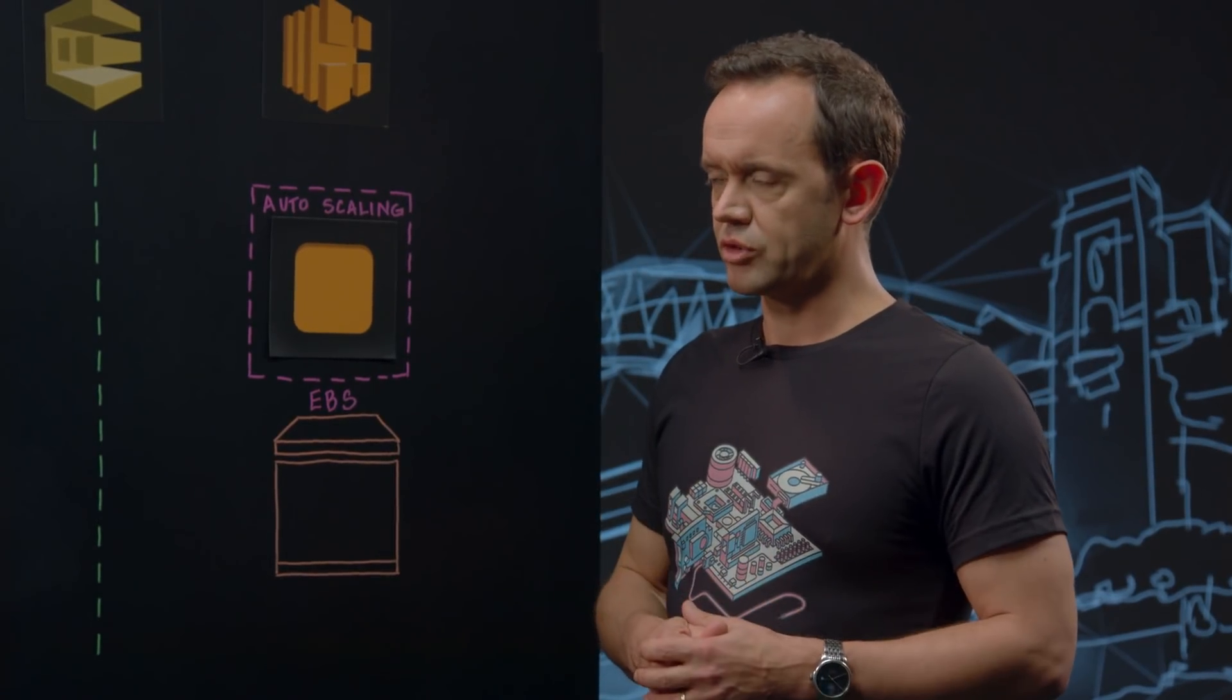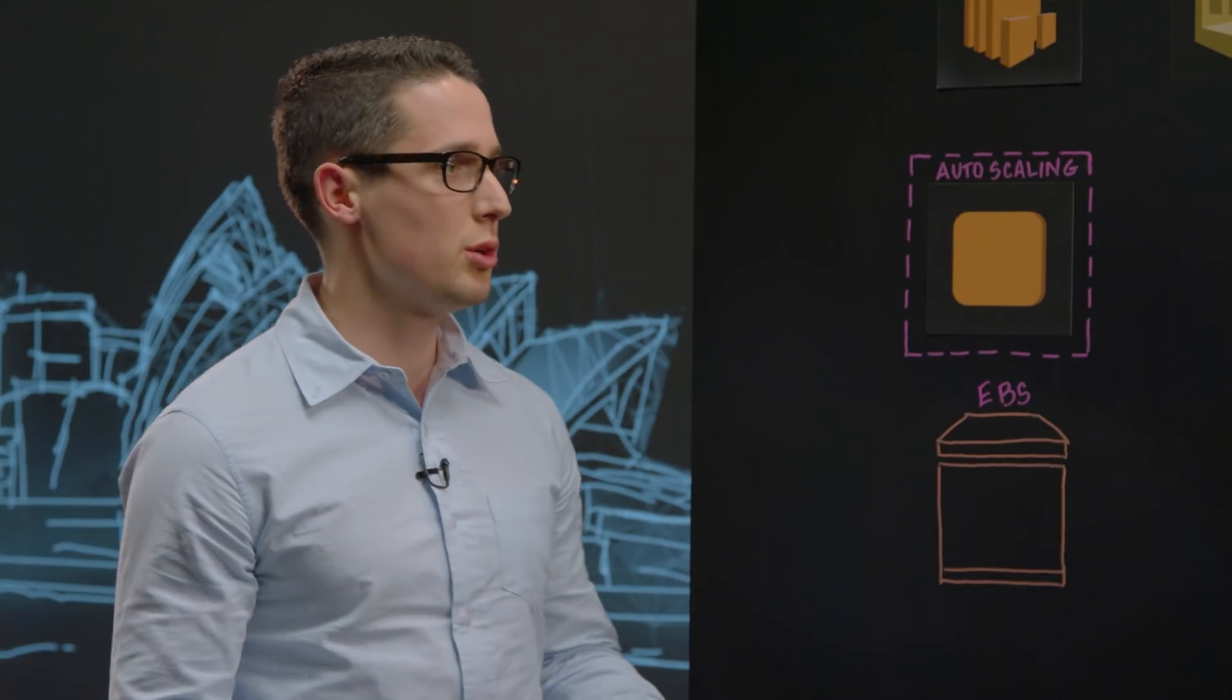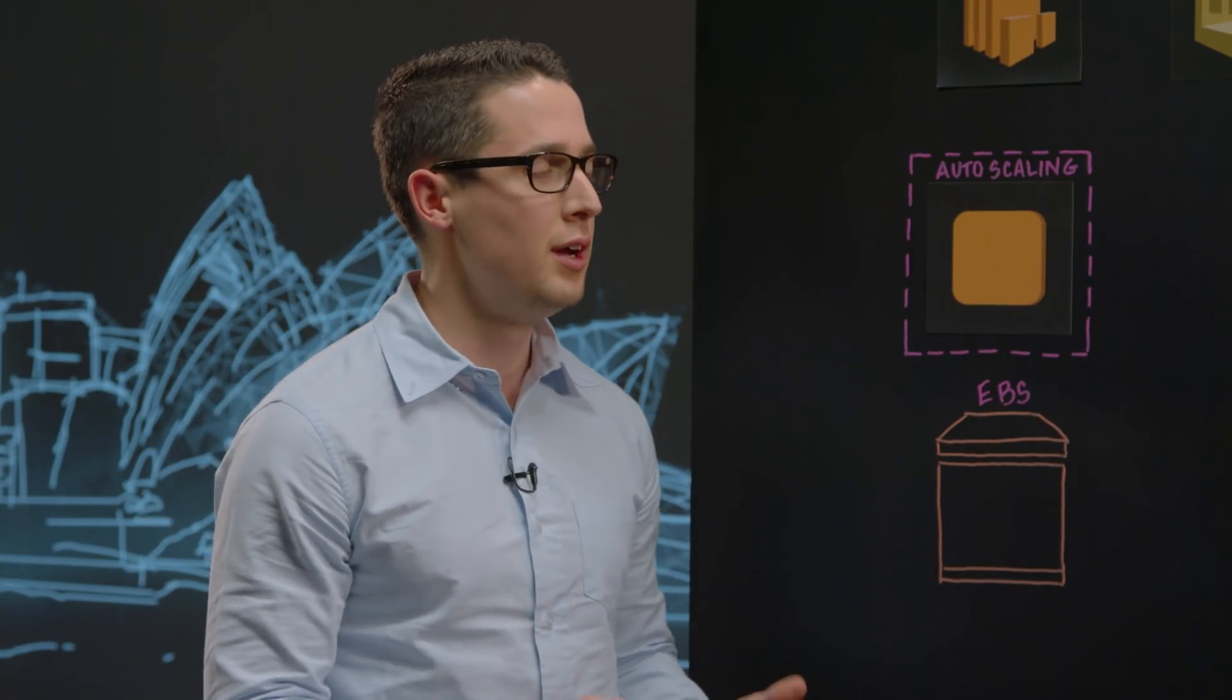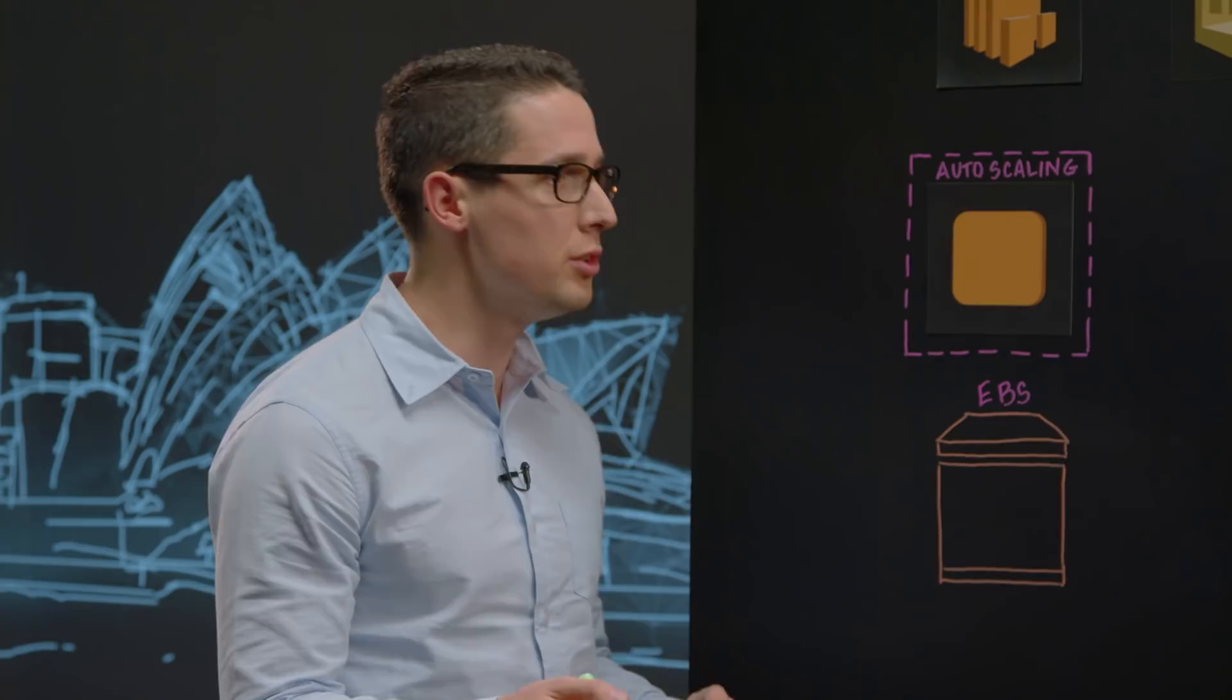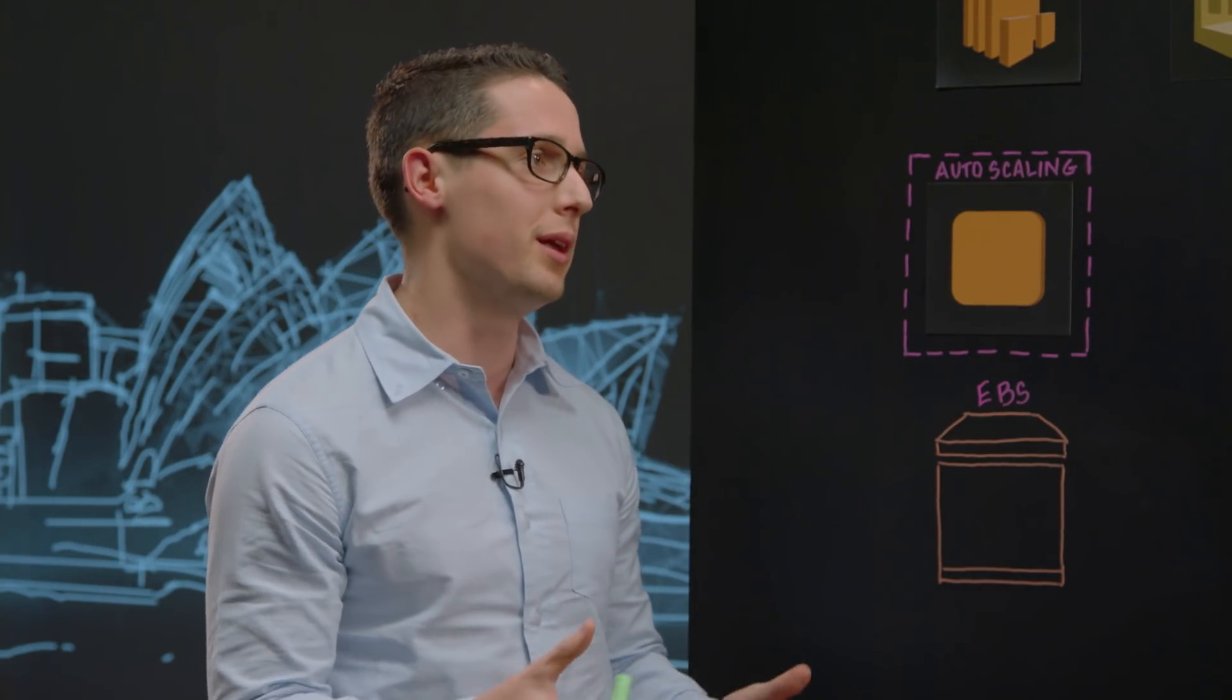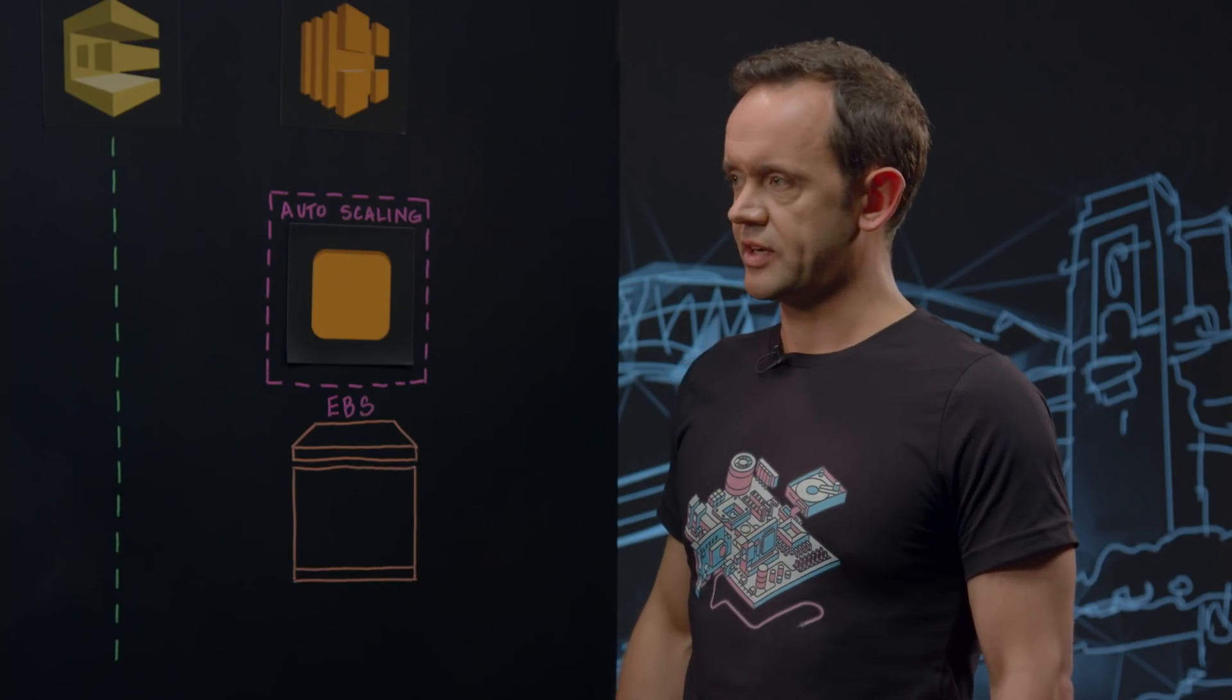So today we're going to focus a little bit on the rostering platform. Are you able to describe the rostering platform at a sort of high level and how it's used? Yeah, so essentially we have a rostering application that helps us coordinate our ground staff. For a large airline this is quite a big challenge. You have a lot of humans moving around, you have people going to different airports, and you need to make sure that everybody's in the right place at the right time in order to make sure that your planes take off. A business critical function.